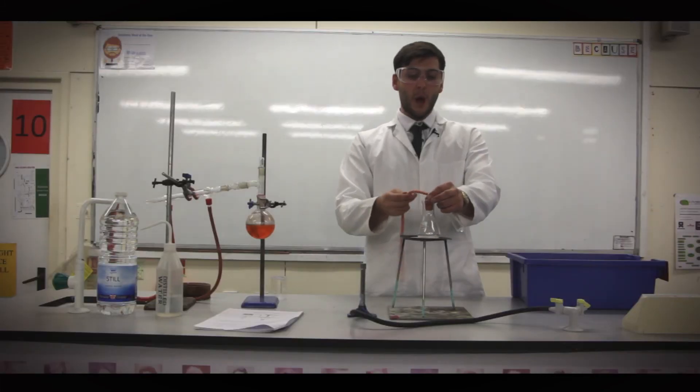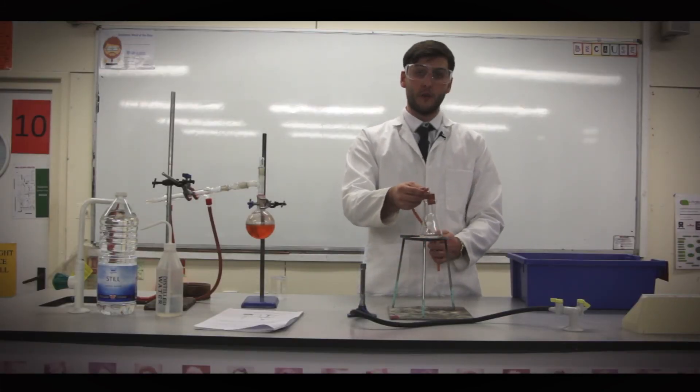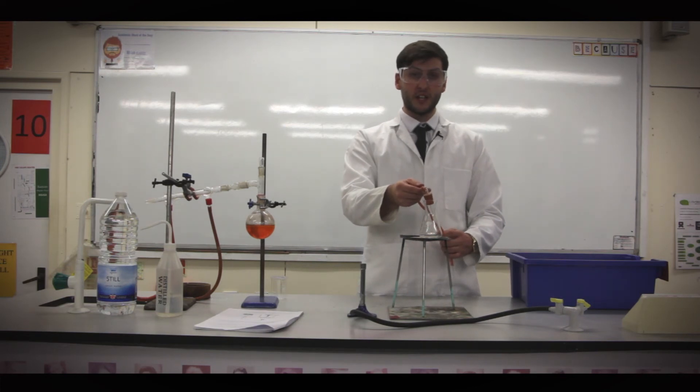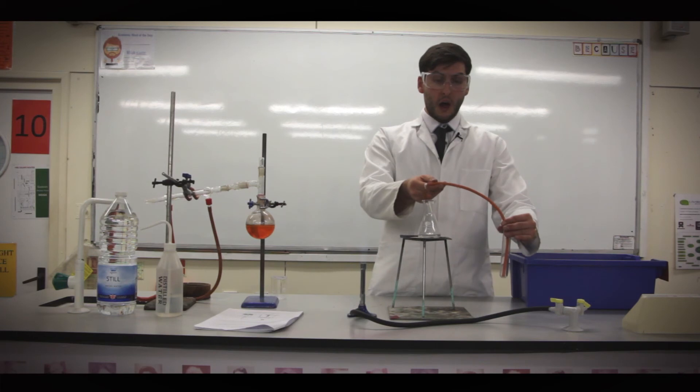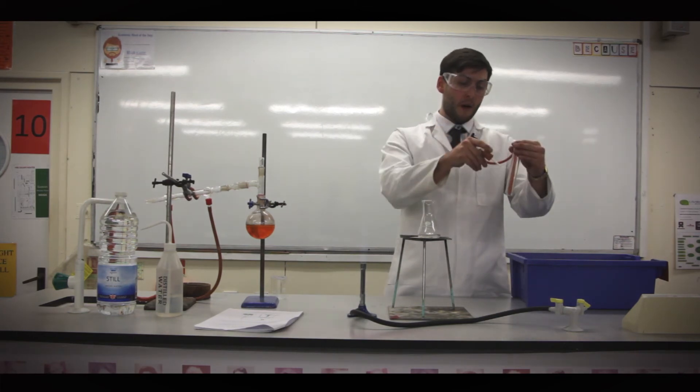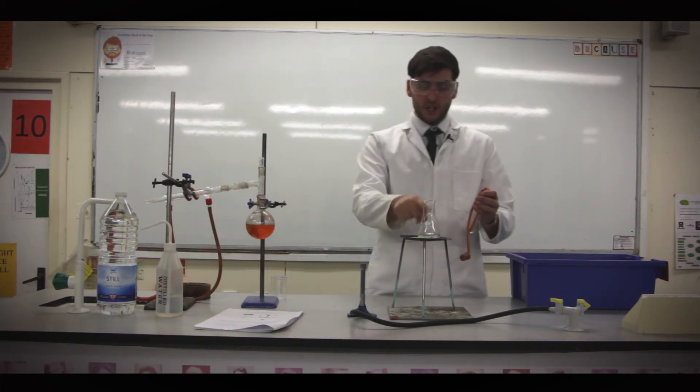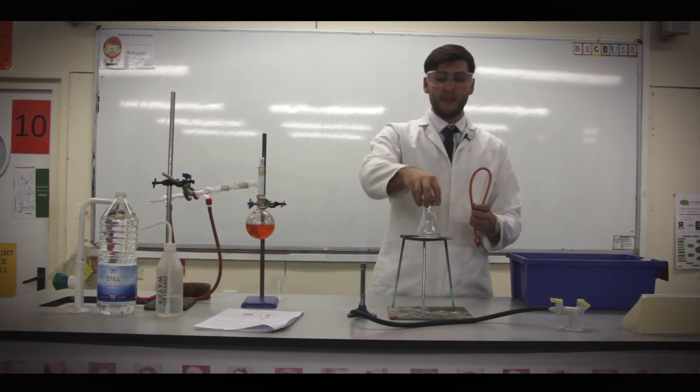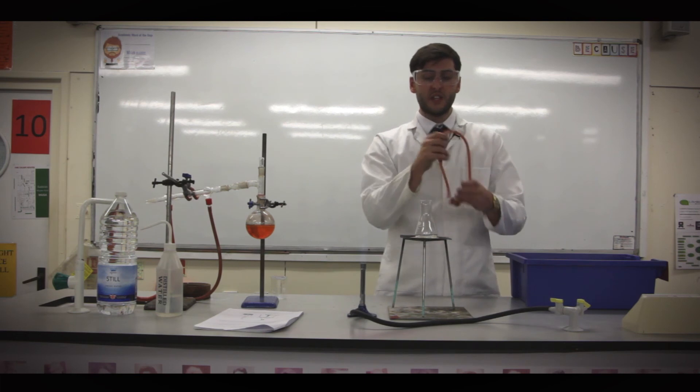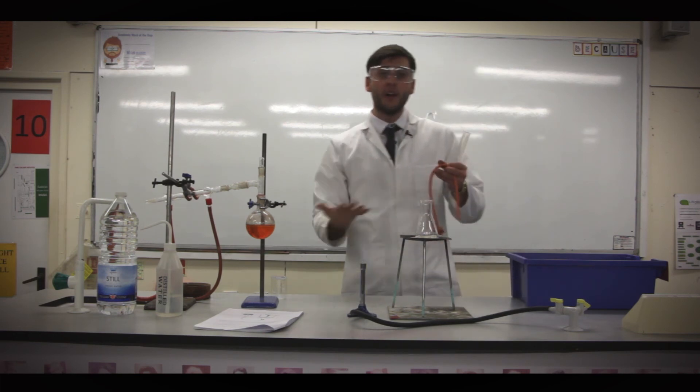And it would go into a test tube. Now this is the wrong conical flask for the bung, so I would obviously change it. This test tube would then be put in cold water, and it would boil, and then come out there. And just the same really, you've got the evaporation occurring here and the condensation occurring here. Remember, this is a conical flask, this is a test tube. You could do it in either method.